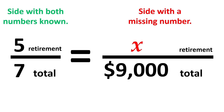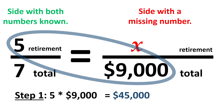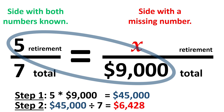To solve the problem, we do two steps. The first step is to cross-multiply — that means to multiply the two numbers that are diagonally across from each other. In this case, the number 5 and the number $9,000, which gives us a new product of $45,000. The second step is to divide this new product by the other number — in this case, 7. Using a calculator, we get $6,428.